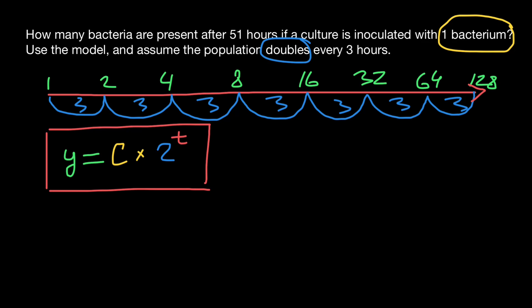Total number of hours, we are told, are 51 hours. Our culture doubles every three hours. So doubling cycles would be 51 divided by three, which is 17 doubling cycles.